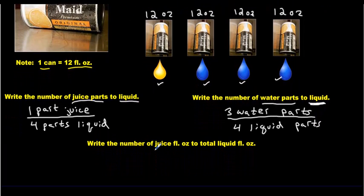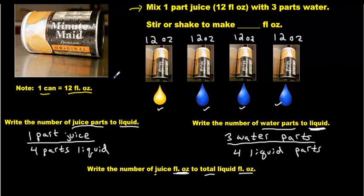And then, write the number of juice fluid ounces. Okay, so now we're getting specific here with the parts to total liquid ounces. How many juice ounces do we have? 12. There it is. That's the only one. 12 ounces. So we'll write 12 OZ.